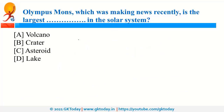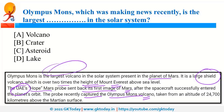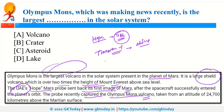Olympus Mons is the largest volcano in the solar system, located on the planet Mars. It is a shield volcano and is over two times the height of Mount Everest. It was in news because the UAE's Hope Mission sent images of Mars and captured Olympus Mons. Other Mars missions in news include China's Tianwen-1 and NASA's Perseverance rover.